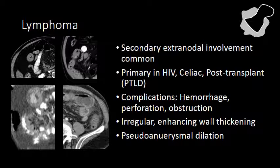We can also see lymphoma involvement of the small bowel, either secondary lymphoma or primary small bowel lymphoma. The small bowel is one of the most common sites to see extranodal involvement of lymphoma. It typically involves one short to intermediate segment of small bowel and results in irregular, non-uniform wall thickening. People often describe pseudoaneurysmal dilation associated with the wall thickening. When lymphoma of the small bowel is a primary small bowel lymphoma, it is typically associated with HIV, celiac disease, or a solid organ transplant. Lymphoma of the small bowel associated with solid organ transplant is often called post-transplant lymphoproliferative disease.